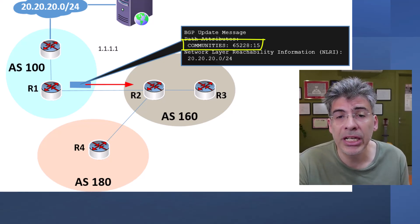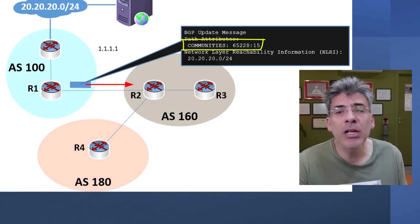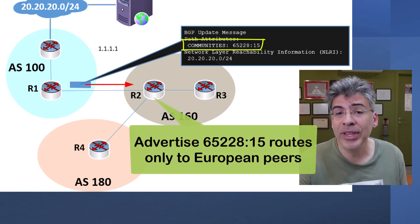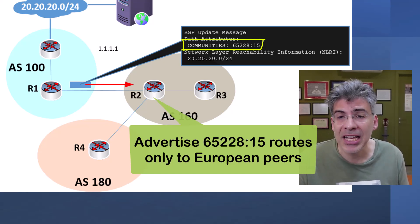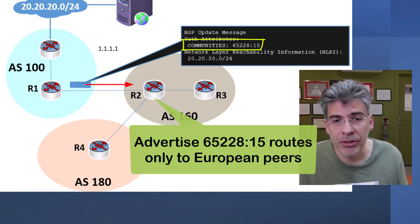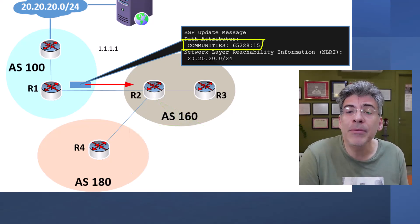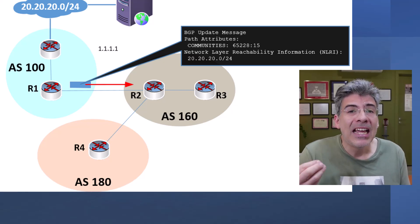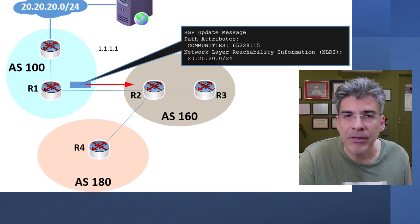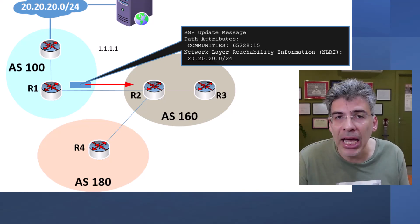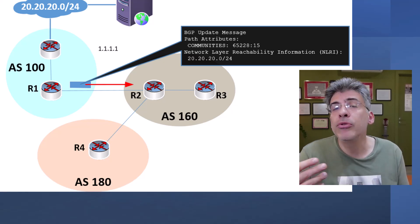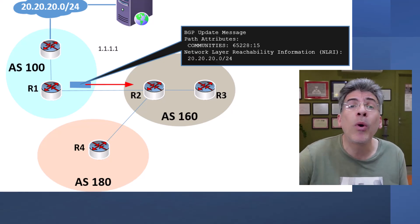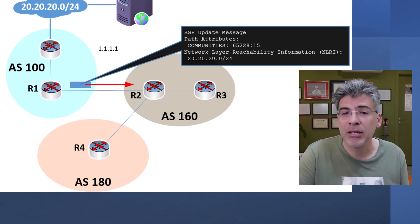Another use of this community could be geographic control — you can apply a route map that advertises routes with this community only within Europe, for example, and prevents their advertisement to non-European peers. Since communities are simply tags or labels set on particular routes that create groupings, you can then apply anything you like to each community using route maps, giving you a great level of flexibility and granularity in what you can achieve using communities.